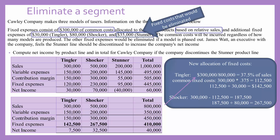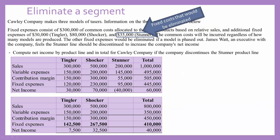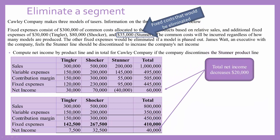Now when we add those fixed expenses into the table, we can calculate our new net income after eliminating Stunner. Looking at the problem, our net income actually decreases by $20,000 after eliminating the Stunner line. It was $60,000 before, and now it's gone down to $40,000.